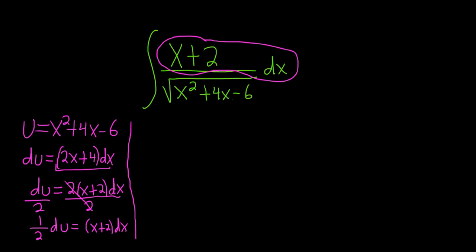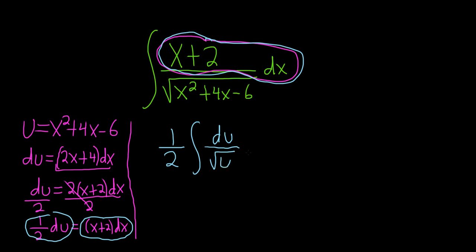So let's rewrite what we have. x plus 2 dx is going to be 1 half du, so we'll pull out that 1 half, and then we have our du. At this point, the only thing that's been replaced is this piece here. This x plus 2 dx has been replaced with 1 half du. And on the bottom, we simply have the square root of u.